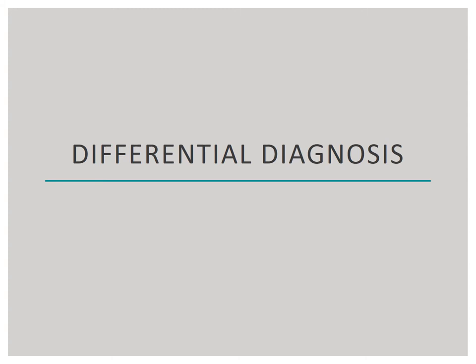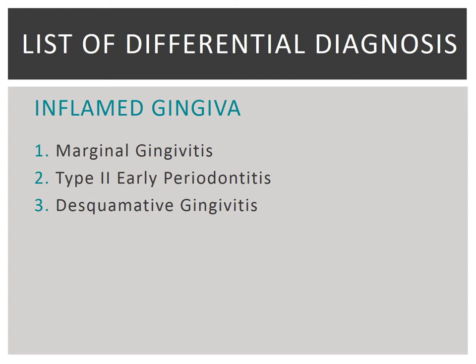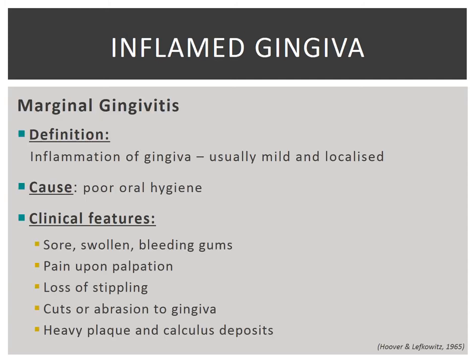Differential diagnosis. The patient complains of bleeding gingiva and from the clinical examination, it is gathered that the patient's gingiva is in fact inflamed, erythematous, and receding. I will be discussing the differential diagnosis for the presenting abnormalities in reference to the gingival condition. Marginal gingivitis is the inflammation of gingival tissue and is relatively mild and sometimes localised, existing around a few or several teeth.